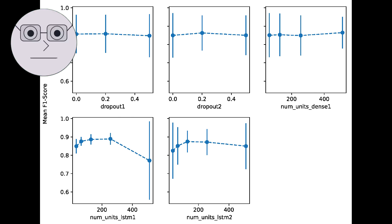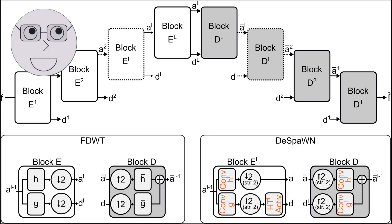The Biorthogonal Wavelet is a family of wavelets that have two sets of basis functions, one for decomposition and one for reconstruction. They are commonly used in image compression and denoising. Each type of wavelet has its own unique properties and applications.